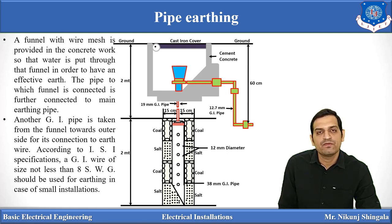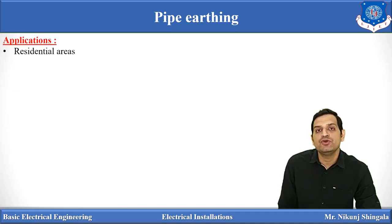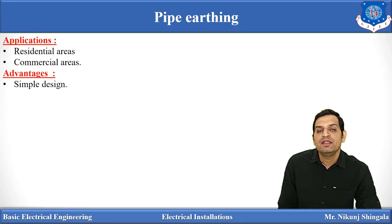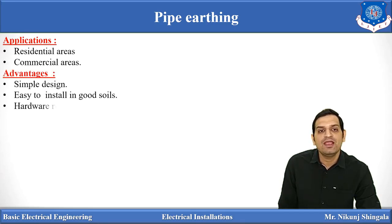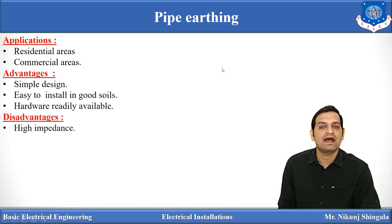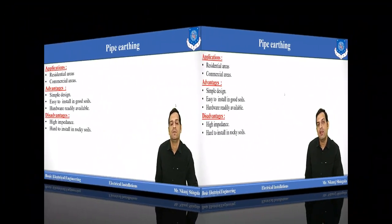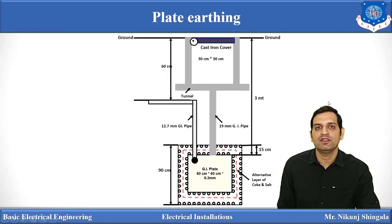Pipe earthing is basically used for small applications such as residential and commercial areas. The advantage is that it is simple in design and easy to install in good soils. The disadvantages are high impedance and it is hard to install in rocky soils.